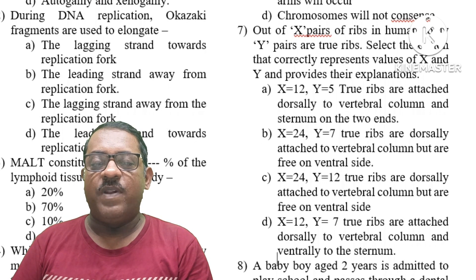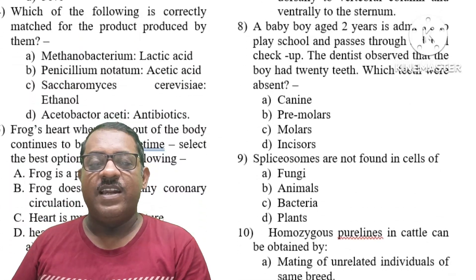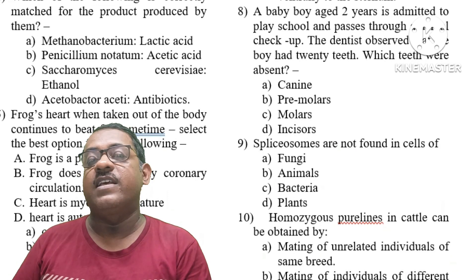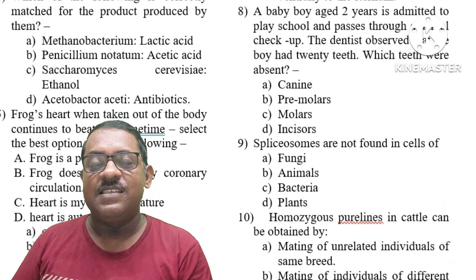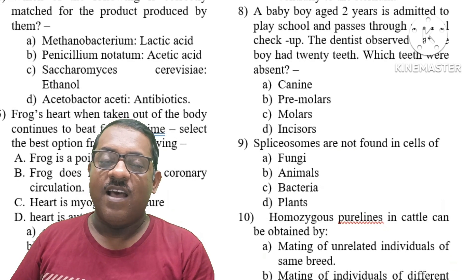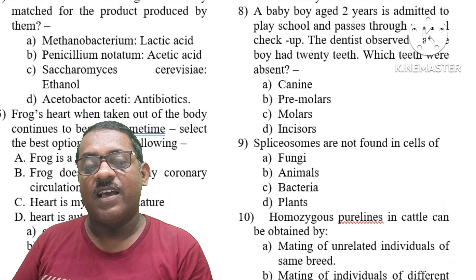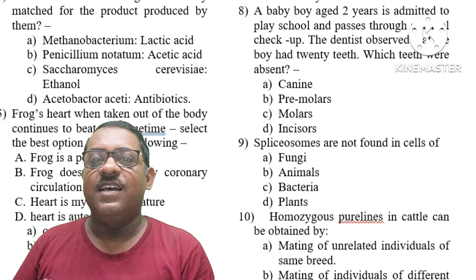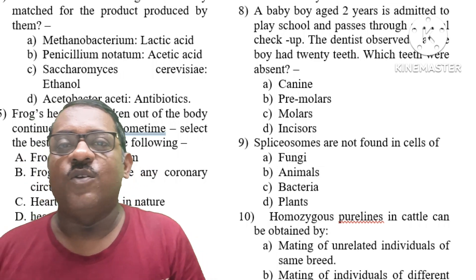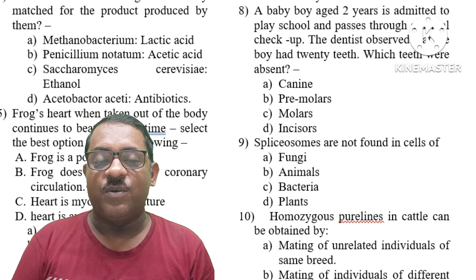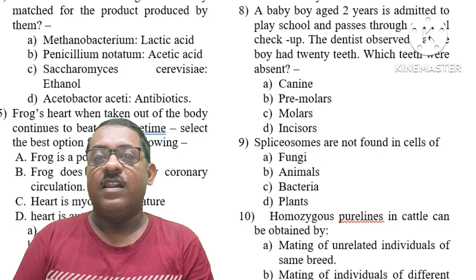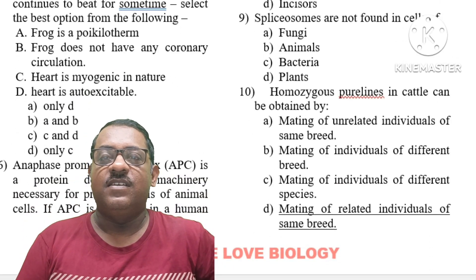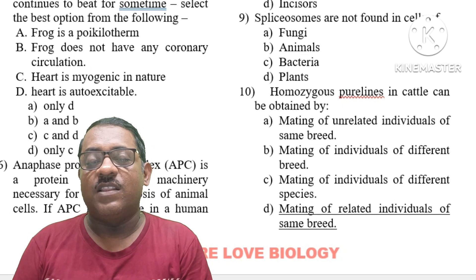Question number 8: A baby boy of two years is admitted to a play school and passes through a dental check-up. The dentist observed that the boy had 20 teeth. The absent teeth were premolars. In a two-year-old, premolars are not yet present — the correct answer is premolar.